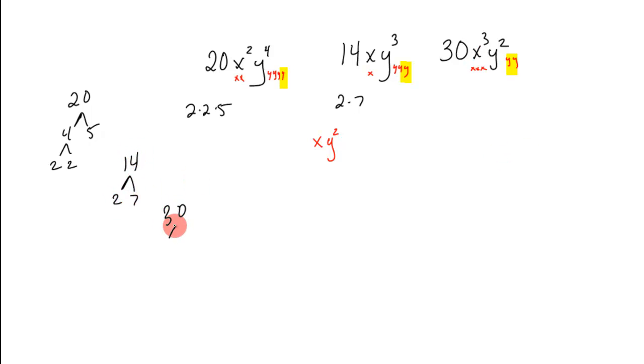And thirty. Well that's just three times ten. That's two five. So it would be two times three times five. Well as I look at them again.